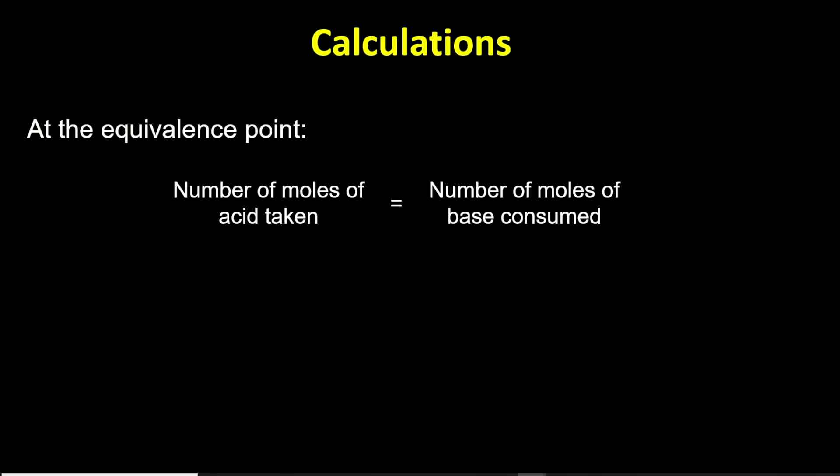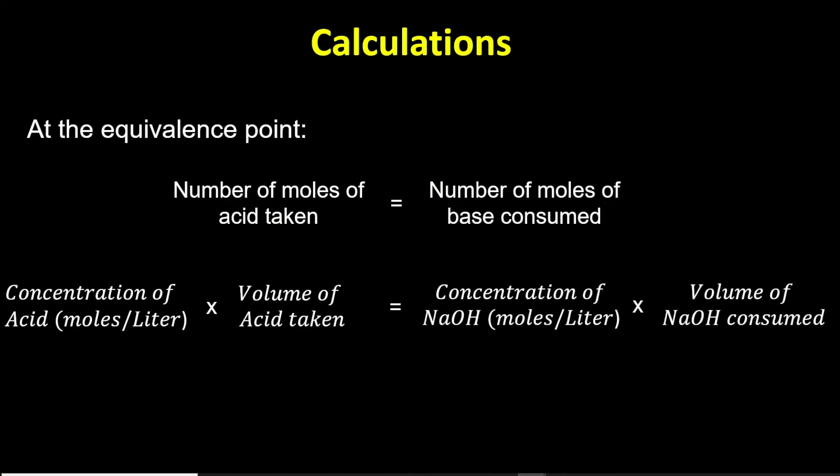At the equivalence point, number of moles of acid is equal to number of moles of base. Using the formula C1V1 is equal to C2V2, we can calculate the concentration of acid if we know the volume of acid from pipette, concentration of base from part 1, and volume of sodium hydroxide from the buret.